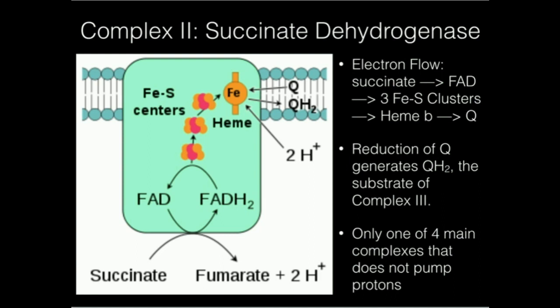Now the FADH2, or reduced flavin, is going to transfer its electrons through a series of iron-sulfur centers. Then those electrons are going to go through a heme, and then the electrons are then going to go into ubiquinone, reducing it to ubiquinol. And that's also going to contribute to the ubiquinol pool.